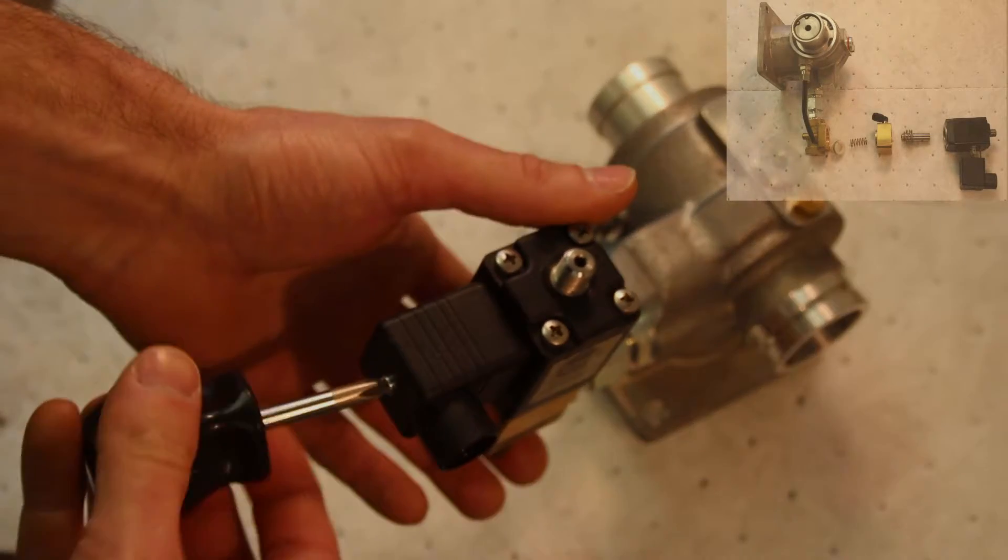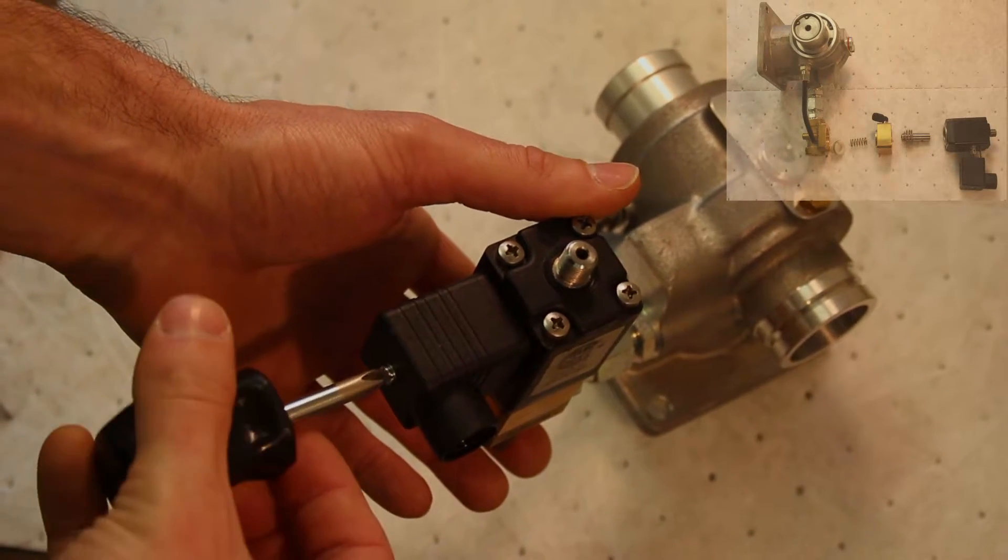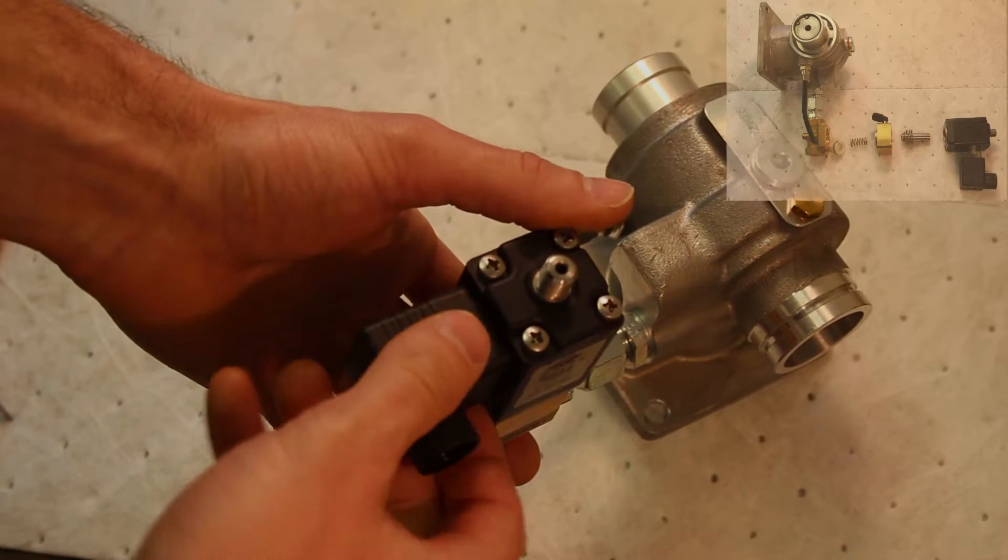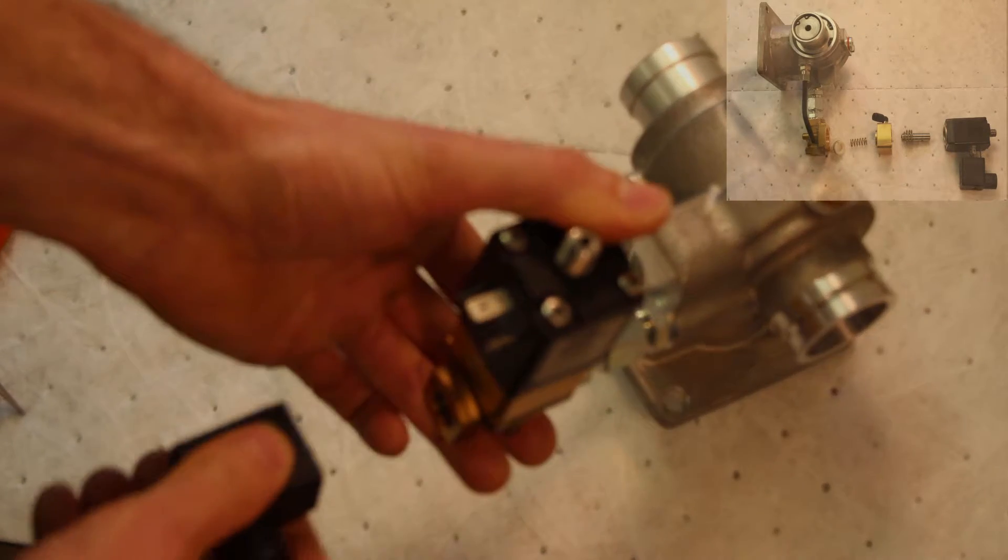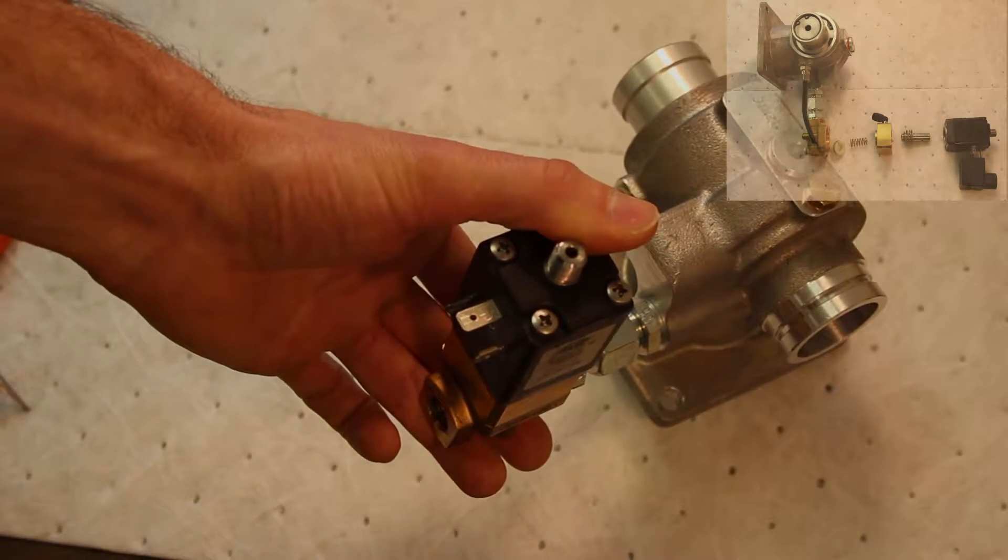Start by removing the solenoid cord cap from the solenoid valve. The screw holding the cord cap on is located on the back of the cord cap. If the cap is stuck on the valve, gently rock the cap back and forth to work it free.